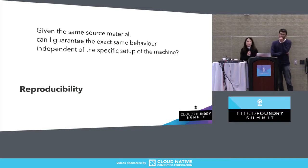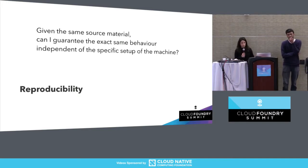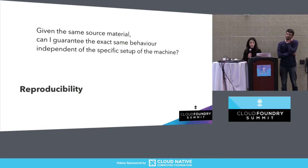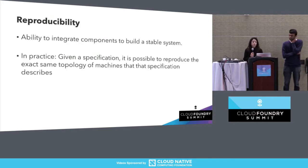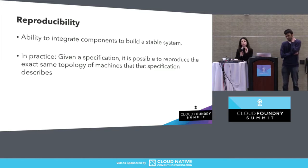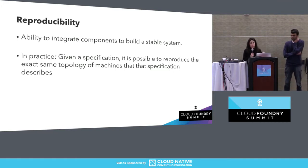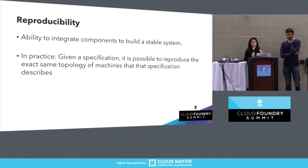Question number one: given the same source material — the same code and the same set of dependencies — can I guarantee the exact same behavior independent of the specific setup of the machine? Reproducibility is all about the ability to integrate components to build a stable system. This means not only code, but also the specific infrastructure it's built on, like specific VMs and networks.